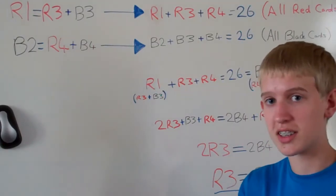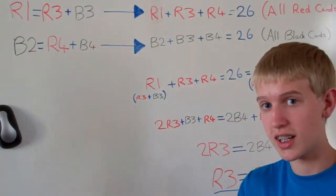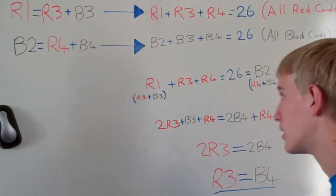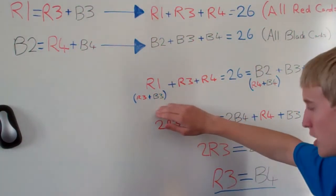Right, next when you move along, if you add all the reds and all the blacks, both equal 26.